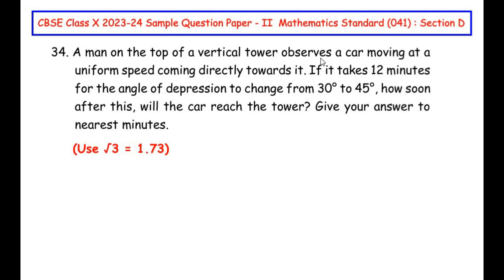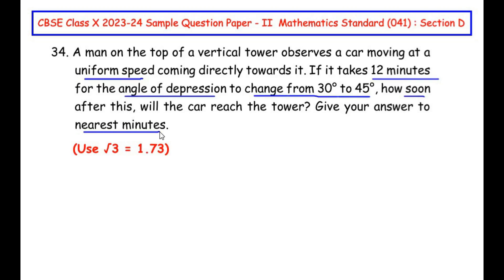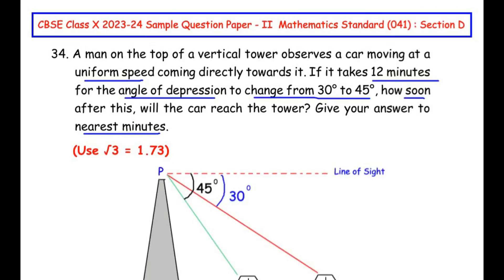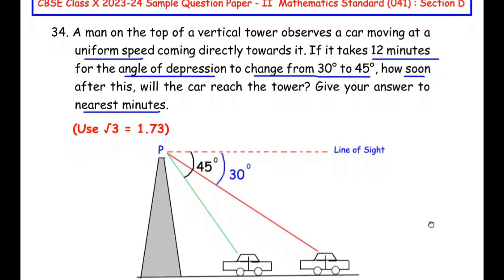A man on the top of a vertical tower observes a car moving at a uniform speed coming directly towards it. If it takes 12 minutes for the angle of depression to change from 30 degrees to 45 degrees, how soon after this will the car reach the tower? Give your answer to the nearest minute and consider that square root of 3 is 1.73.